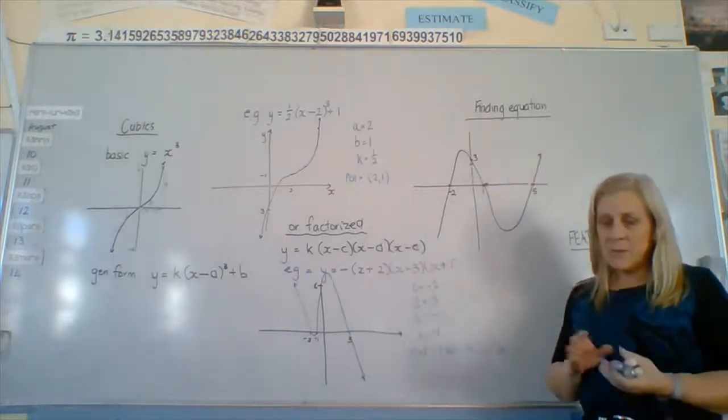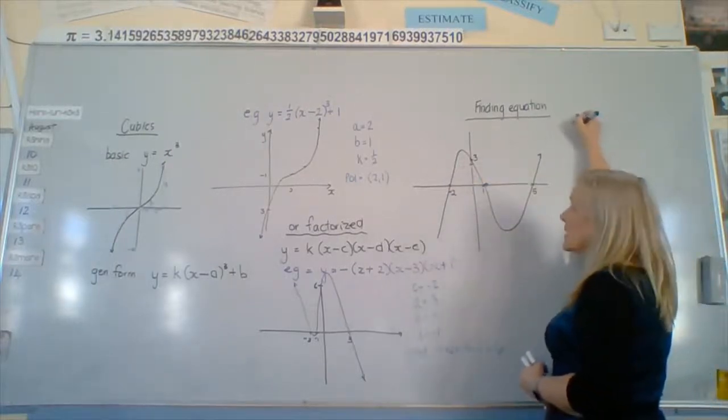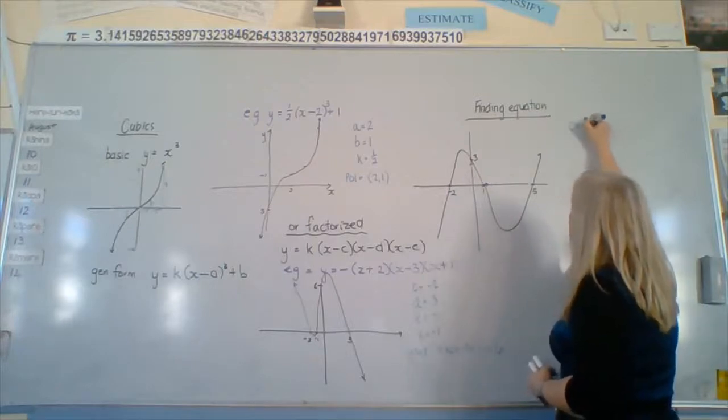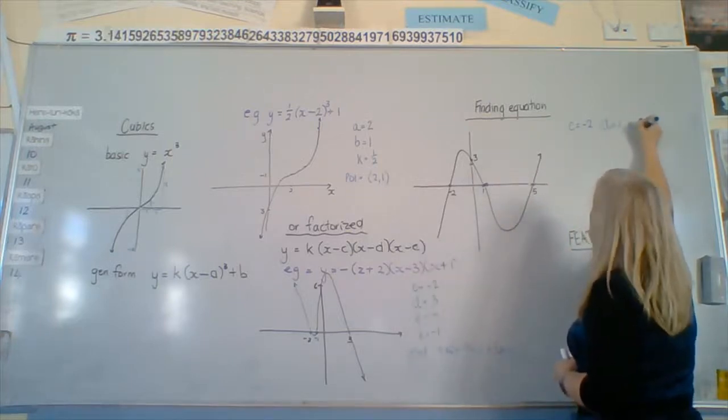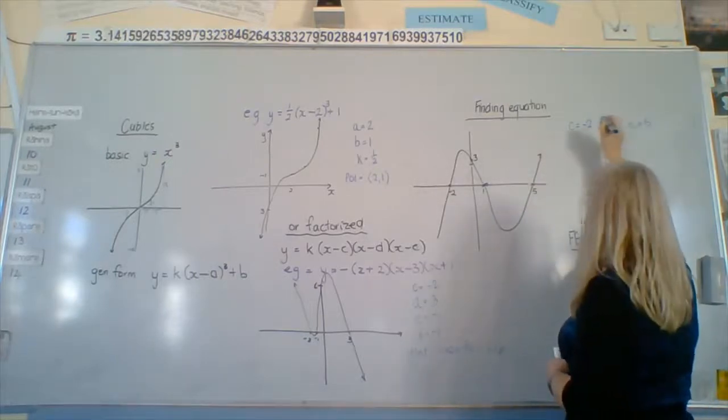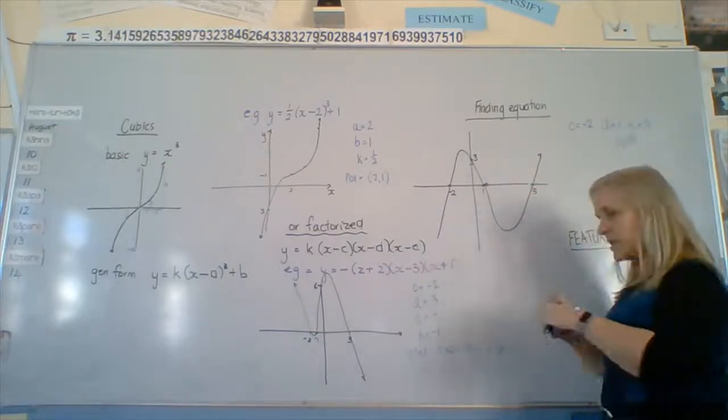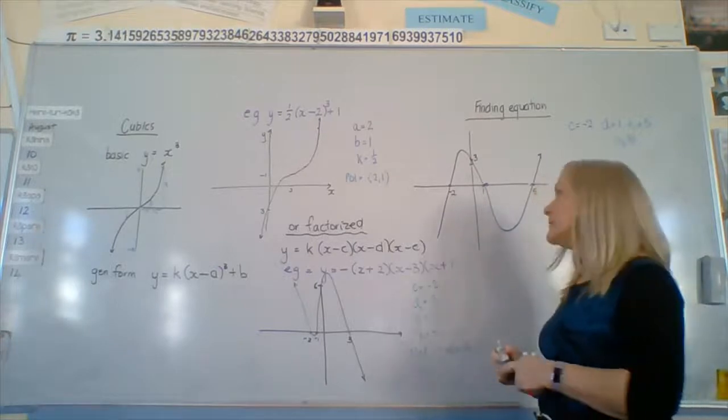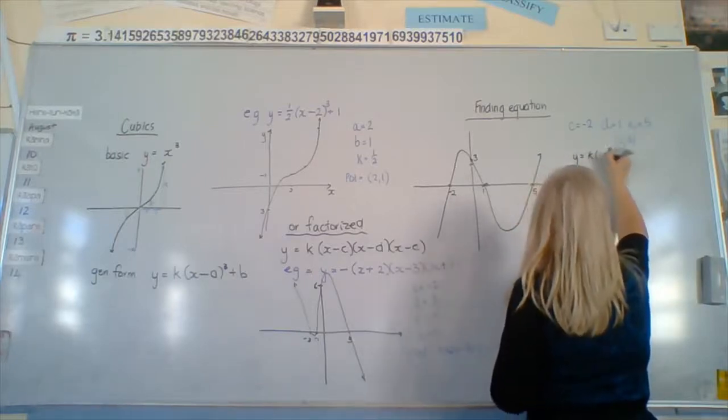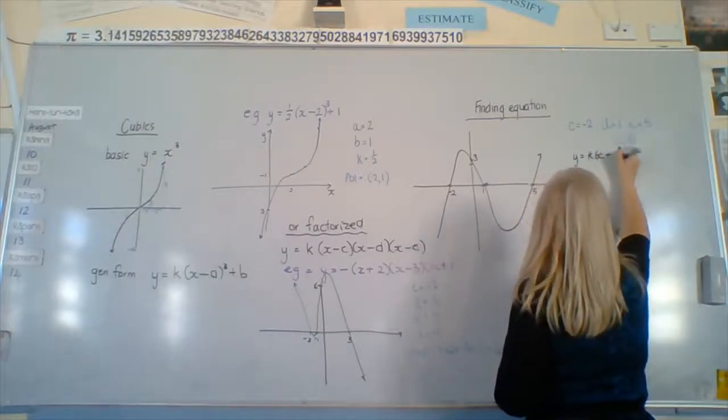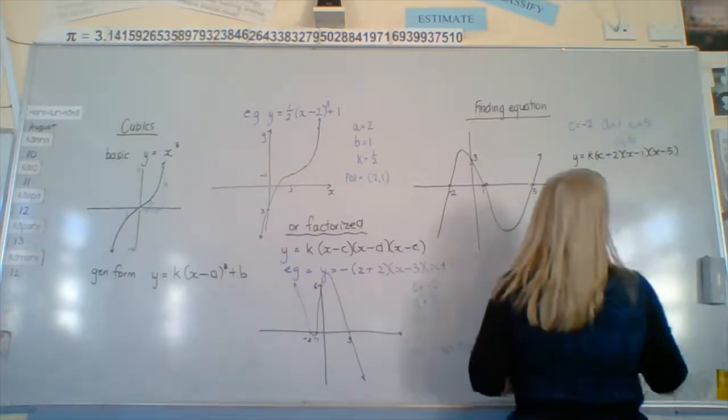Same sort of thing as we've been doing, finding the equation is done exactly the same way. Go through the process of finding all the points. So we've got c equals negative 2, d equals 1, e equals 5, and my extra point is 0, 3. Remember, I need that extra point to put in so that I can find out what k is. So my general formula says y equals k times (x plus 2)(x minus 1)(x minus 5). I need to find k by using this point.